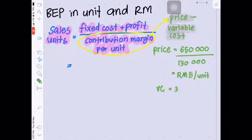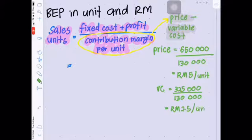You will get variable cost per unit when you divide total variable cost, which is 325,000, with selling unit 130,000 unit. Then you will get RM2.50 per unit.